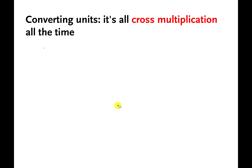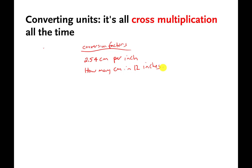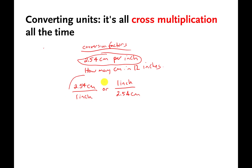A lot of people do it a different way using something called conversion factors. I'll briefly go over this because the lab actually asks you to write some conversion factors. Same setup: 2.54 centimeters per inch. How many cm in 12 inches? You write two conversion factors — 2.54 centimeters per one inch, and then you flip the ratio: one inch per 2.54 centimeters. These are called conversion factors.